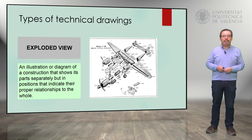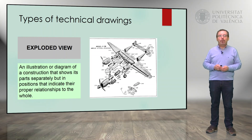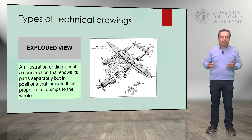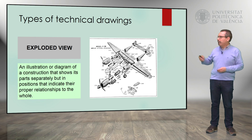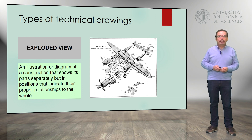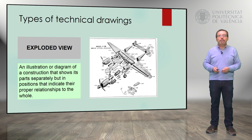An exploded view, on the other hand, is an illustration or diagram of a construction that shows the parts separately, but in positions that show the relative real position of the components. Here we have an example of an aircraft represented as an exploded view.